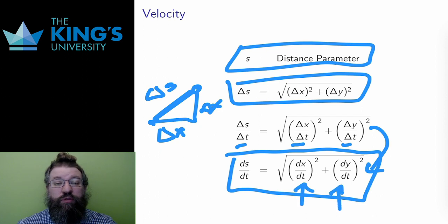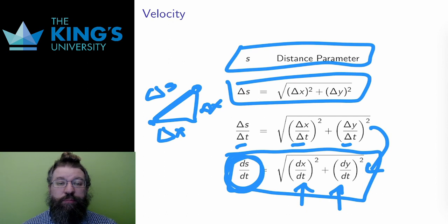This is the rate of change of distance, the square root of the squares of the rate of change of the two coordinates. This is scalar velocity, how much the distance parameter s changes in time t. This is speed.